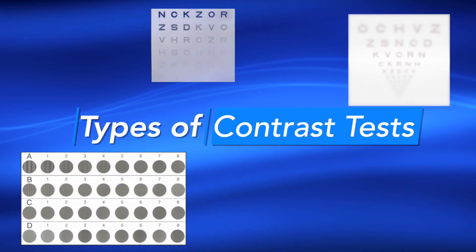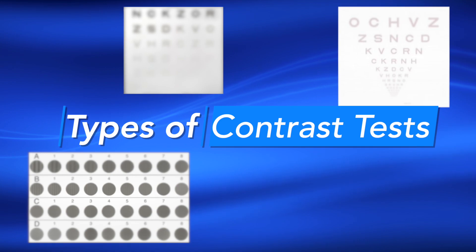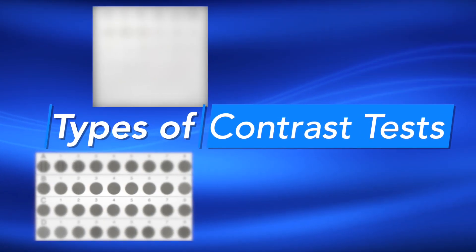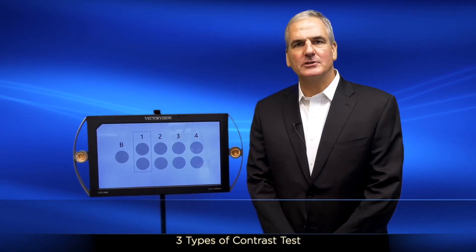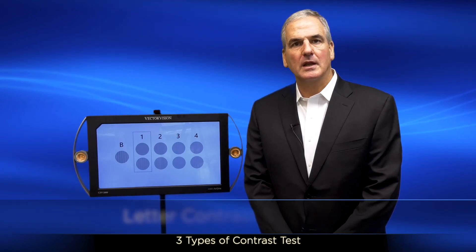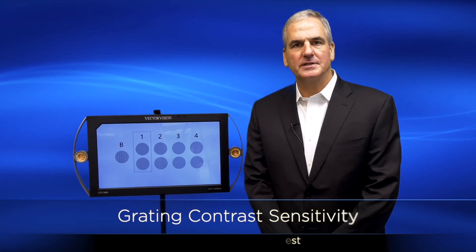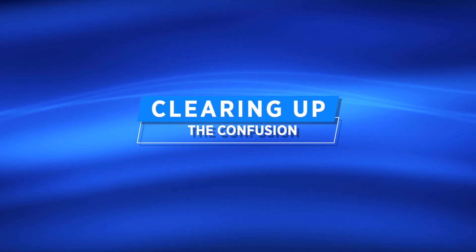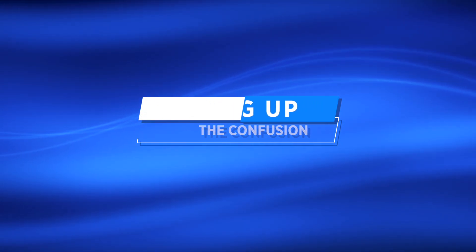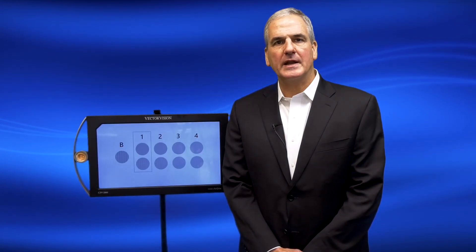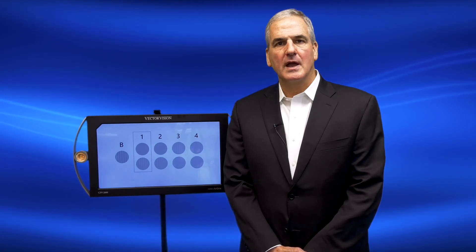These tests are used in more than 50 FDA clinical trials. The purpose of this video is to talk about the different types of contrast tests, how they differ, and the pros and cons of each. Basically, there are three types of contrast tests: low contrast acuity, letter contrast sensitivity, and grating contrast sensitivity. Unfortunately, there is some confusion in the market and many people refer to all three as contrast sensitivity.